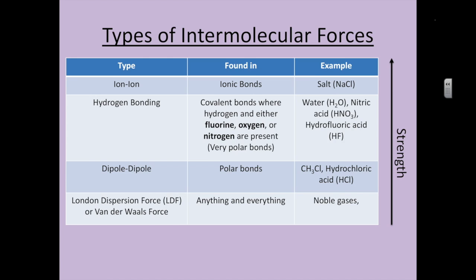Hydrogen bonding is a covalent bond where either hydrogen or either fluorine, oxygen, or nitrogen are present. It can only be these three elements. So F-O-N are the ones you want to remember. These are the most electronegative elements, and that's what makes them very polar bonds. So something like water, nitric acid, or hydrofluoric acid will have some hydrogen bonding.